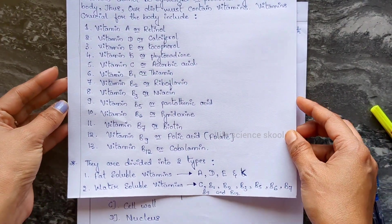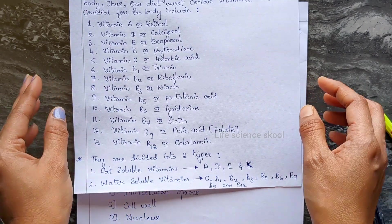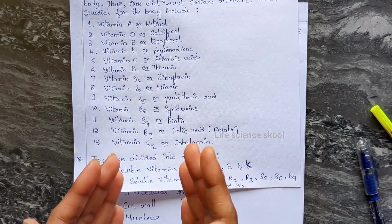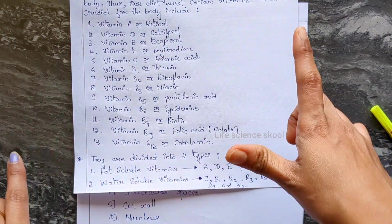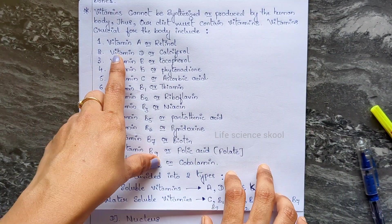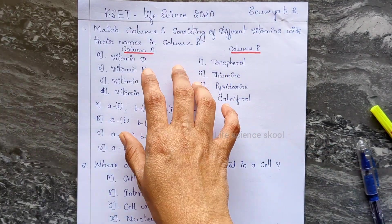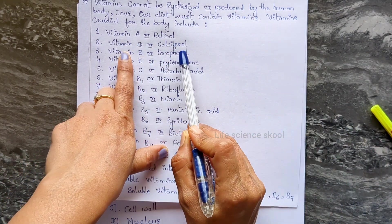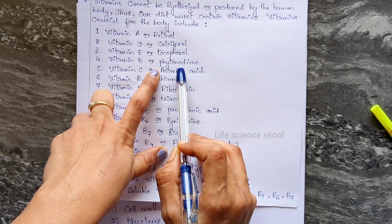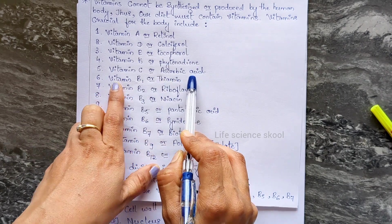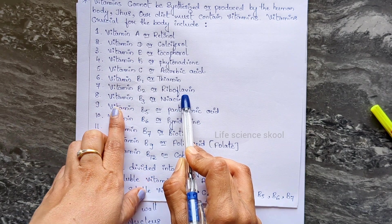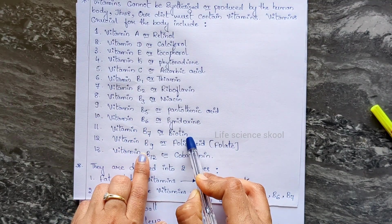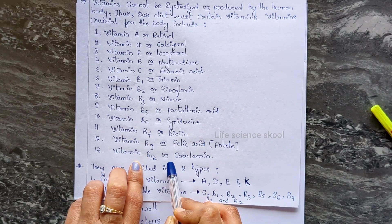Here is the list of vitamins: vitamin A — retinol; vitamin D — calciferol; vitamin E — tocopherol; vitamin K — phytodione; vitamin C — ascorbic acid; vitamin B1 — thiamine; vitamin B2 — riboflavin; vitamin B3 — niacin; vitamin B5 — pantothenic acid; vitamin B6 — pyridoxine; vitamin B7 — biotin; vitamin B9 — folic acid (also called folate); vitamin B12 — cobalamine.